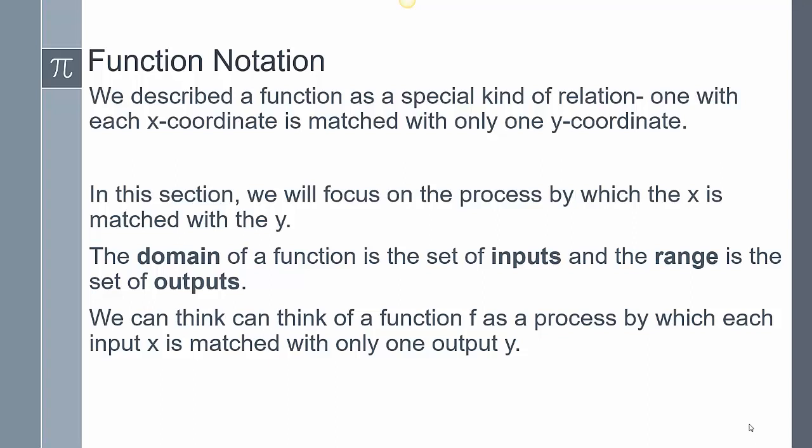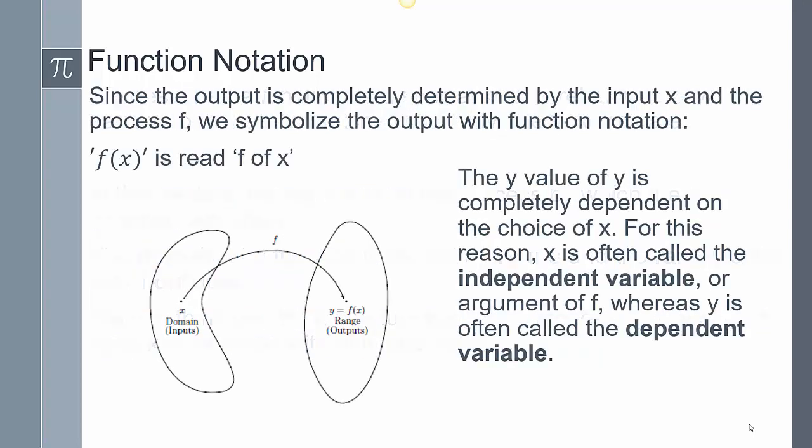Now we could actually describe this function f as a process in which we can match these inputs with these outputs. Just to remember though, f has, for whatever input that it has, it's only going to have one output for y. And this is kind of like a visual representation of that. So if we take a look at this function notation here, we're going to see this symbology, this f of x.